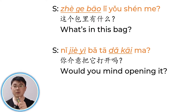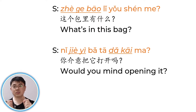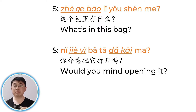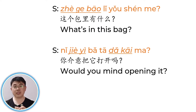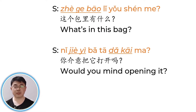这个包里有什么? 这个 means this, 包 means bag, 里 means inside — what's inside this bag? 你介意把它打开吗? 介意 means mind, it's a verb. 打开 means open, also a verb. 你介意 — would you mind? 打开 — open it. Would you mind opening it? Or directly: 把它打开 — open it, it's an order.